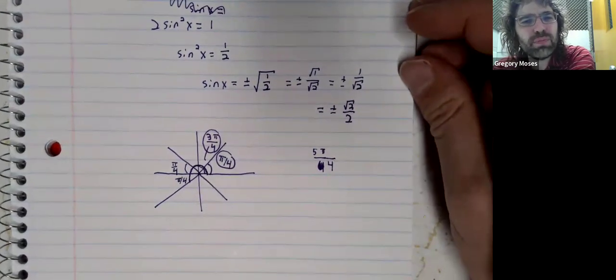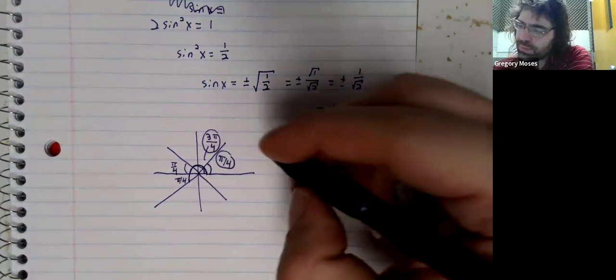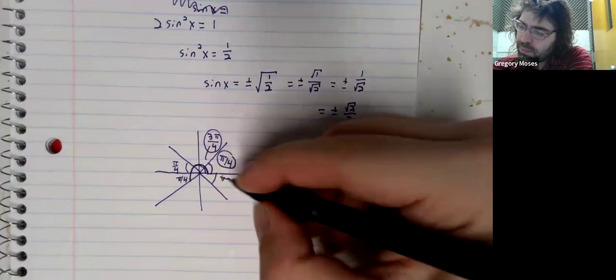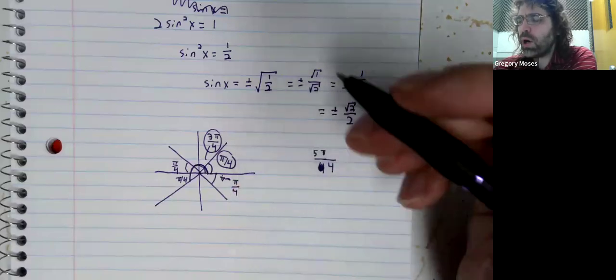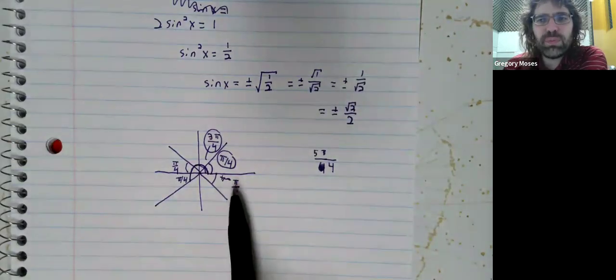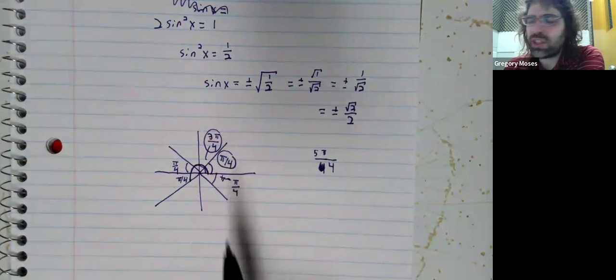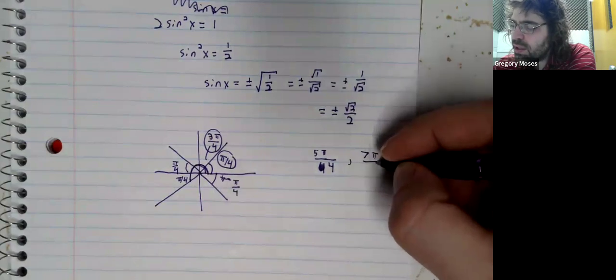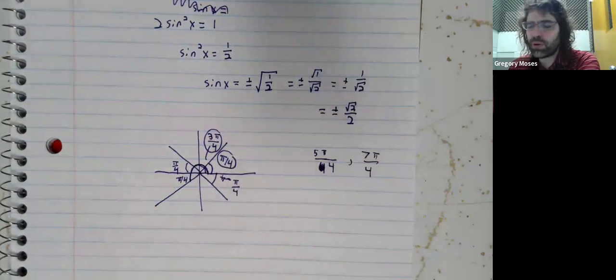Sorry about the typo. The angle in the fourth quadrant that has pi over 4 as its reference angle is 7 pi over 4.